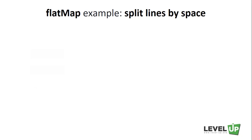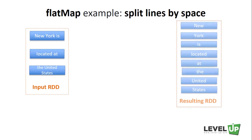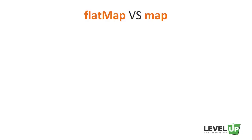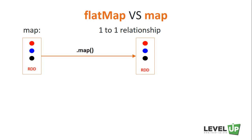A popular case for flat map is splitting an input string into words, as in our word count example. We have an input RDD of lines in a text and want a result of individual words. If we use map, we get an RDD where each element is a list of words for each line — we'd then need to flatten this RDD. Flat map does both in one step. Use map when you have a one-to-one relationship between input and output rows; use flat map when you have a one-to-many relationship.